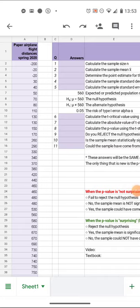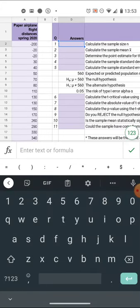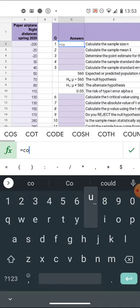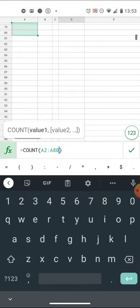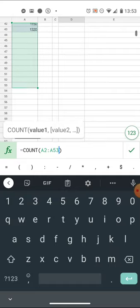In homework 10.3, we return to the data that we saw in 10.1, the spring 2020 data for which we already know the answer. Put in the count, put into the range from A2 all the way down to A43.